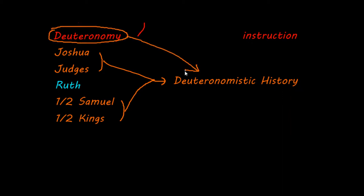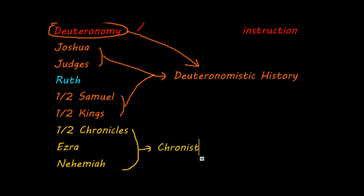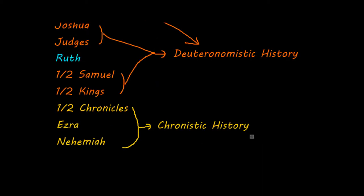The story runs all the way from the taking of the land under Joshua to the exile. The next group of books is 1st and 2nd Chronicles, followed by Ezra and Nehemiah. These books have a lot in common with each other and are often called the Chronistic History, named after the first book in this list, Chronicles. They overlap a lot in time with Samuel and Kings, and deal with the period from the kingship of David all the way to the return from exile.